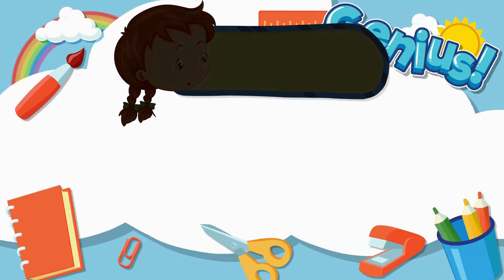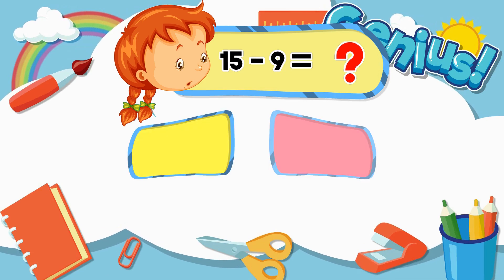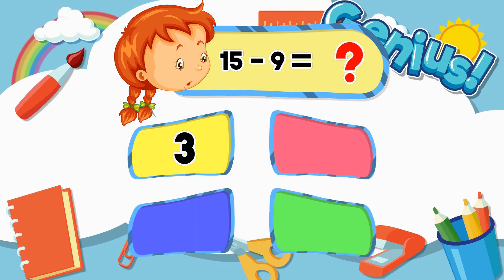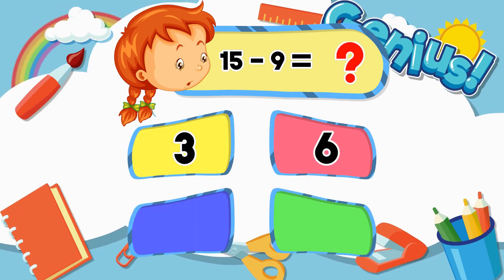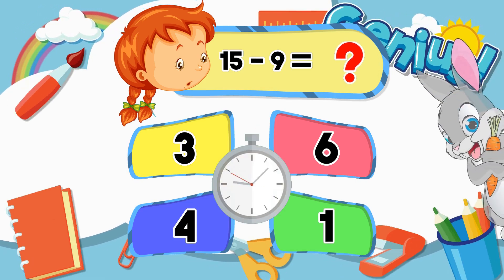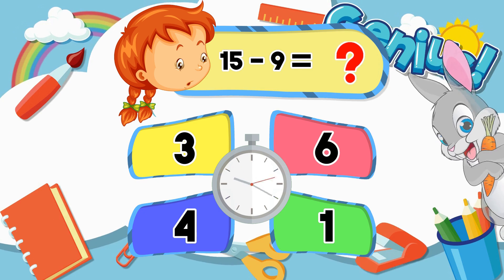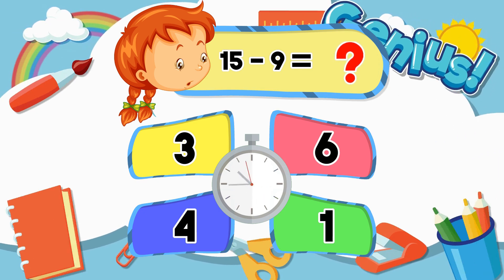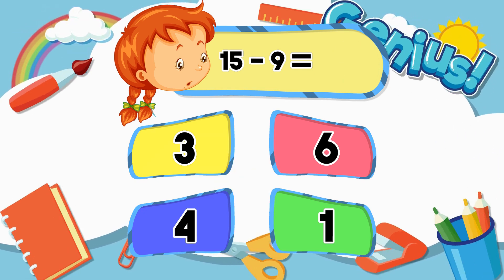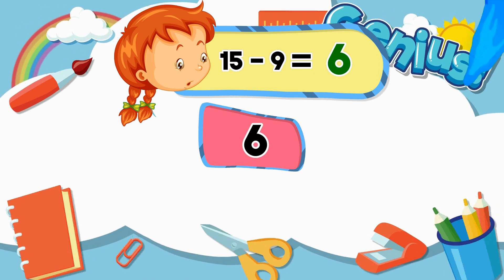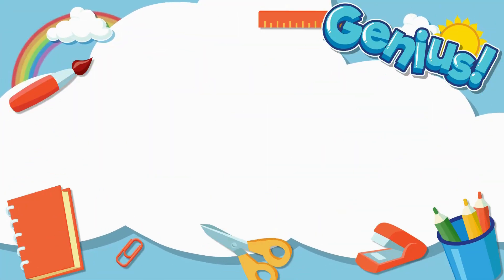What is 15 minus 9? Options: 3, 6, 4, 1. The answer is 6.